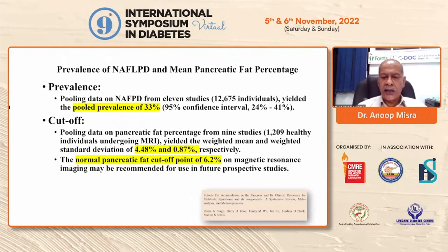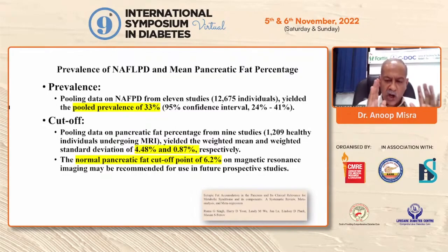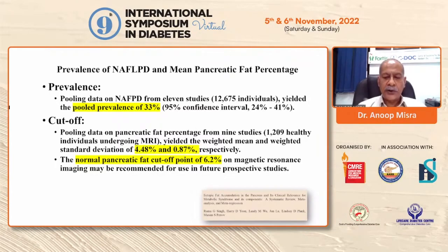Pooling data on pancreatic fat percentage from nine studies, the weighted mean and weighted standard deviation were 4.48 percent and 0.87 percent respectively. The normal pancreatic fat cutoff on magnetic resonance imaging was 6.2 percent. For comparison, in the liver the normal cutoff for NAFLD is 5 percent, and for the pancreas these studies suggest 6.2 percent.